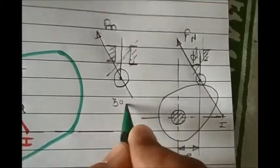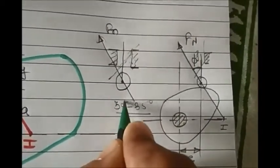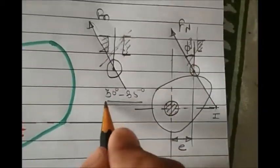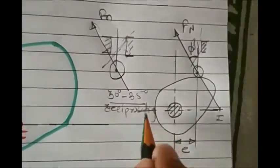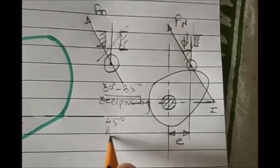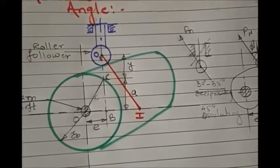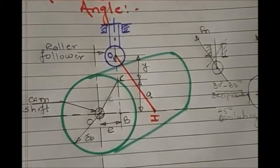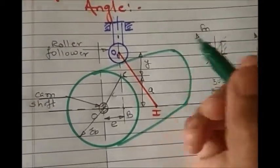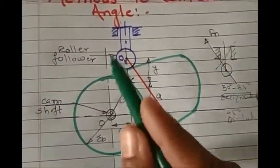We have a maximum pressure angle of 30 to 35 degrees in the case of a reciprocating follower, and for an oscillating follower it is 45 degrees. Now let's derive the equation for the pressure angle.